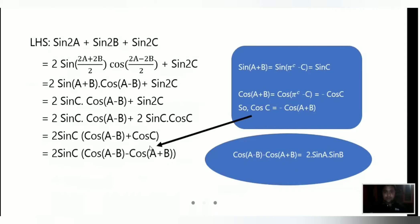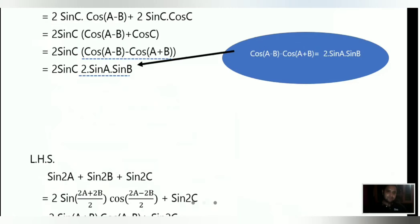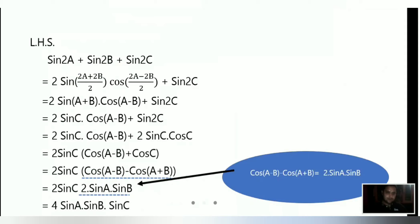Now we apply the formula: cosA·minusP - cos(A+P) = 2sinA·sinB. So cos(A-B) minus cos(A+B) equals 2sinA·sinB. Substituting this: 2sinC times 2sinA·sinB. Multiplying 2 by 2 gives 4, and we get 4sinA·sinB·sinC, which is our required result.